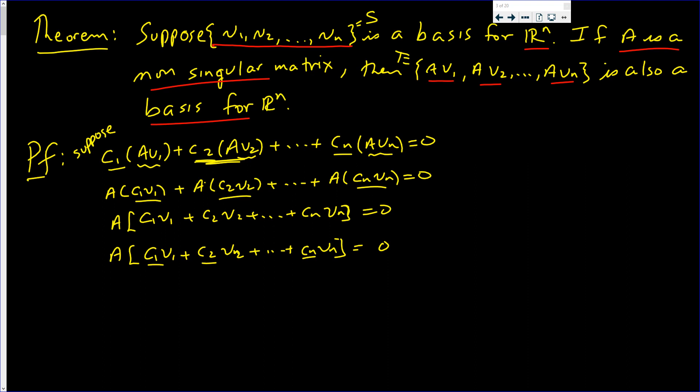On the left hand side, on both sides, I'm going to multiply by A inverse. Then I invoke the associative law. This is A^(-1)A times what's in the brackets. And hopefully you see where this is going. And the right hand side is just zero. Now that's the identity times what's in the brackets equals zero.